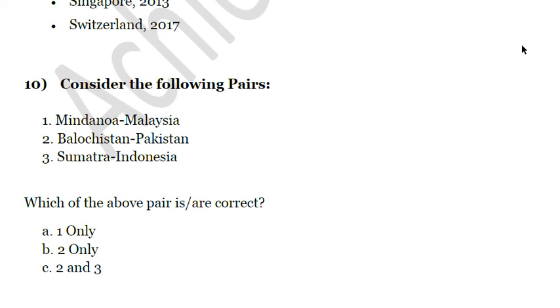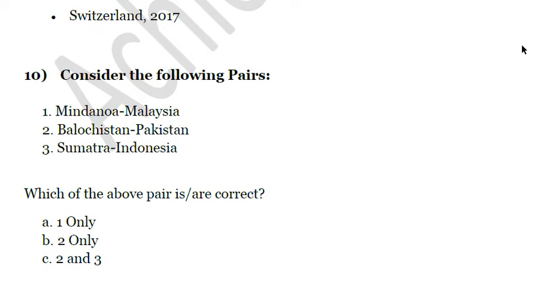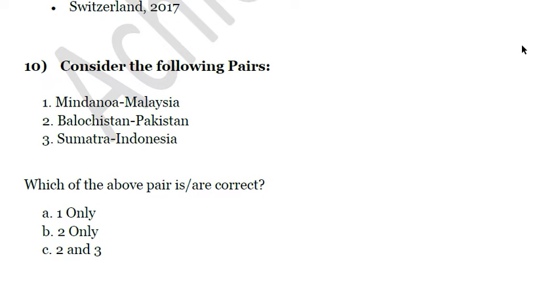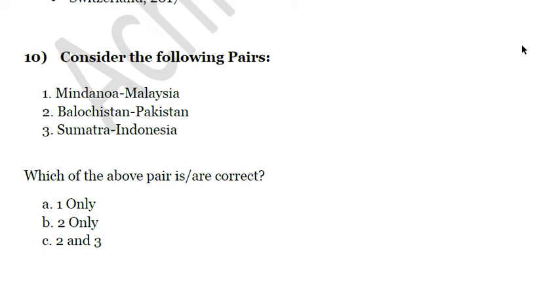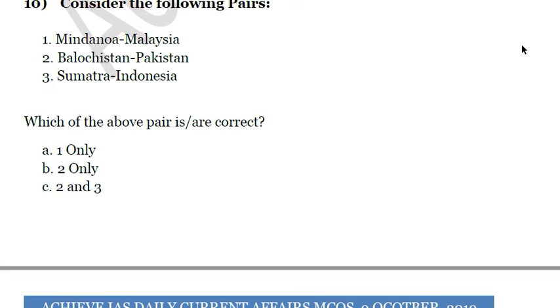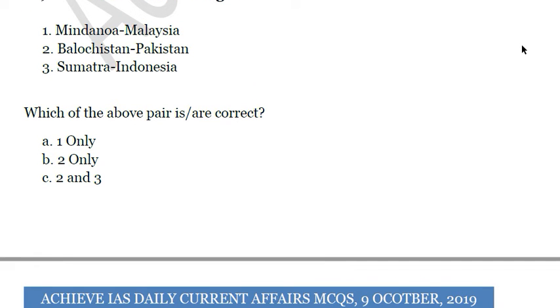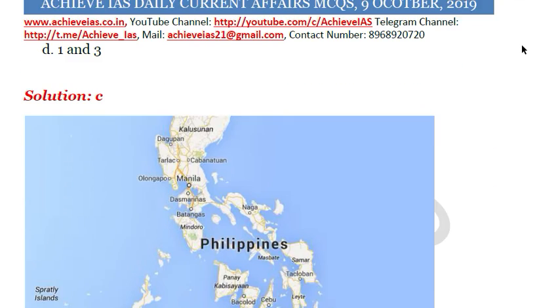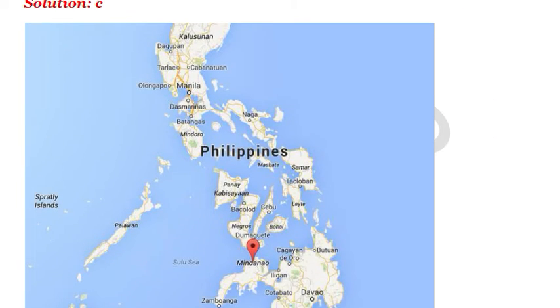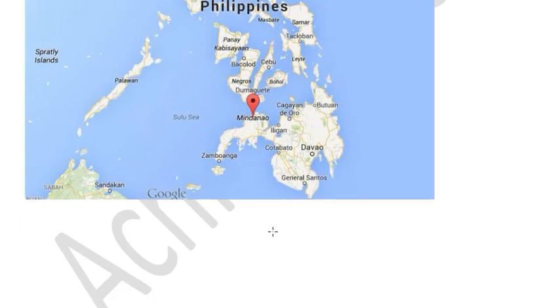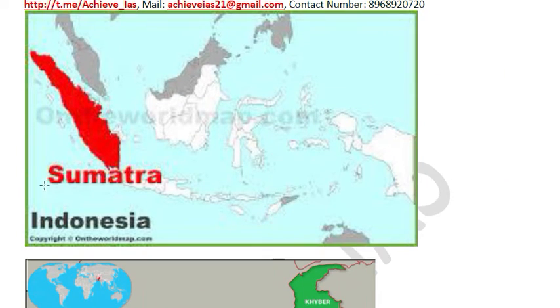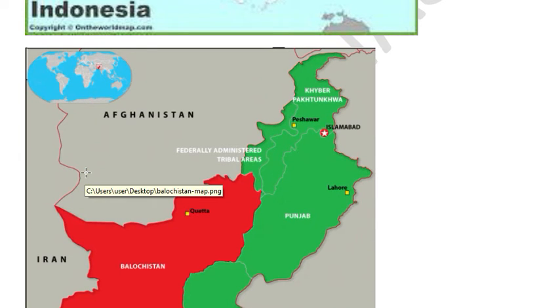The last question: consider the following pairs — first, Mindanao–Malaysia; second, Balochistan–Pakistan; third, Sumatra–Indonesia. Which of the above pairs is correct? The second and third are correct. Sumatra is in Indonesia and Balochistan is in Pakistan, but Mindanao is not in Malaysia — it is in the Philippines.